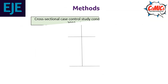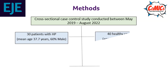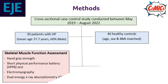Methods: this was a cross-sectional case-control study conducted between May 2019 and August 2022. Thirty patients with hypoparathyroidism were compared to 40 healthy controls. Assessment of skeletal muscle function included hand grip strength, short physical performance battery tests, electromyography, and dual-energy X-ray absorptiometry.